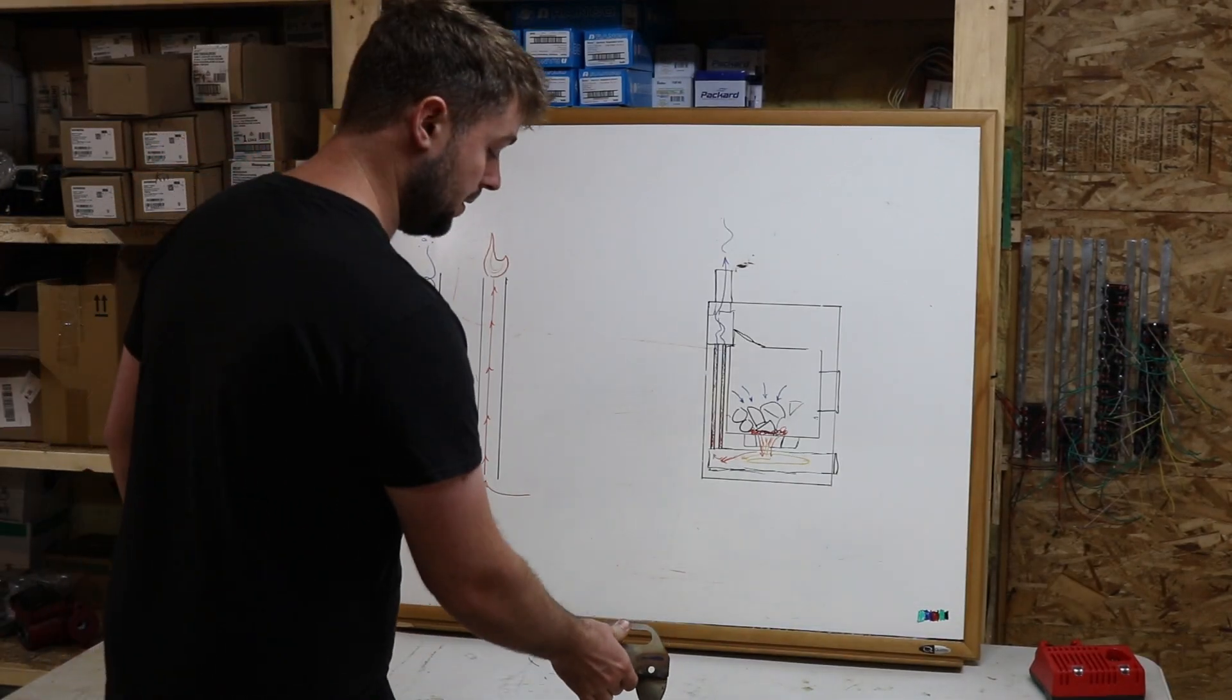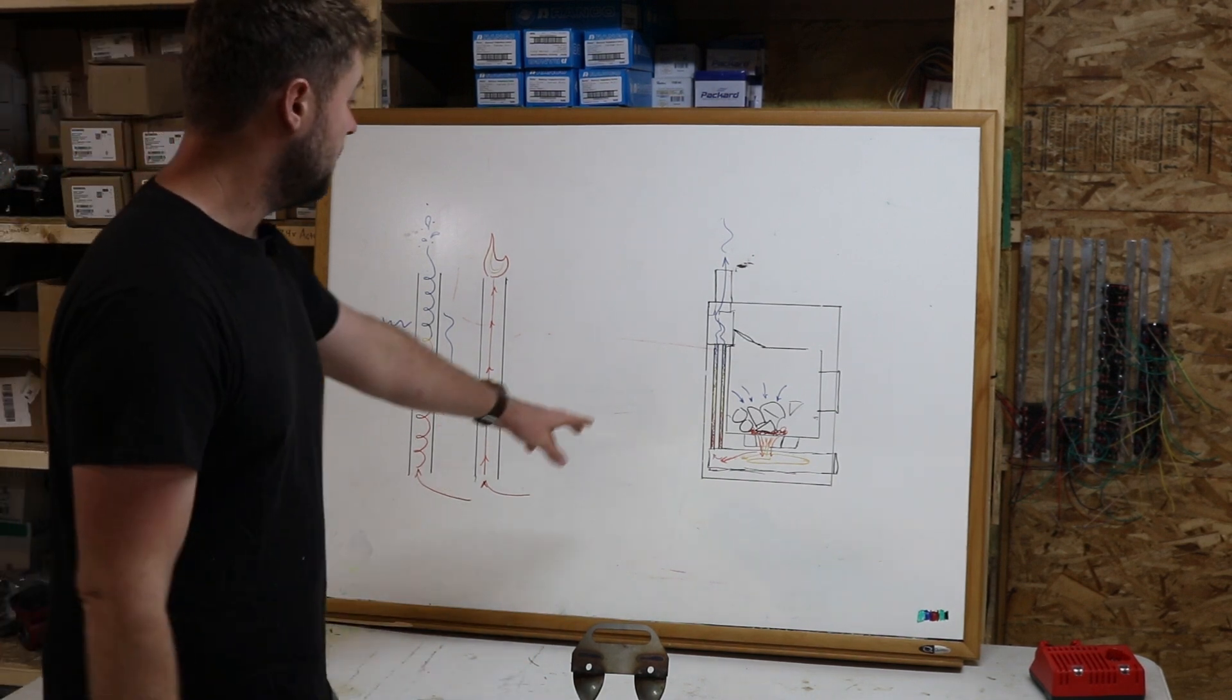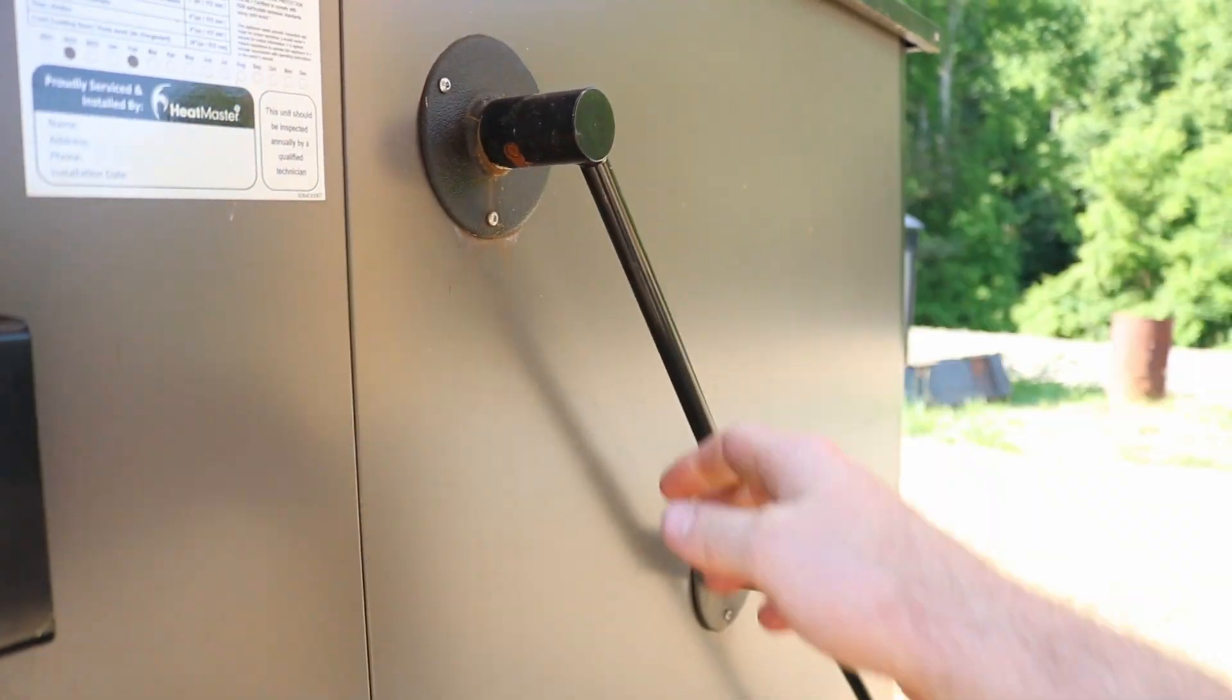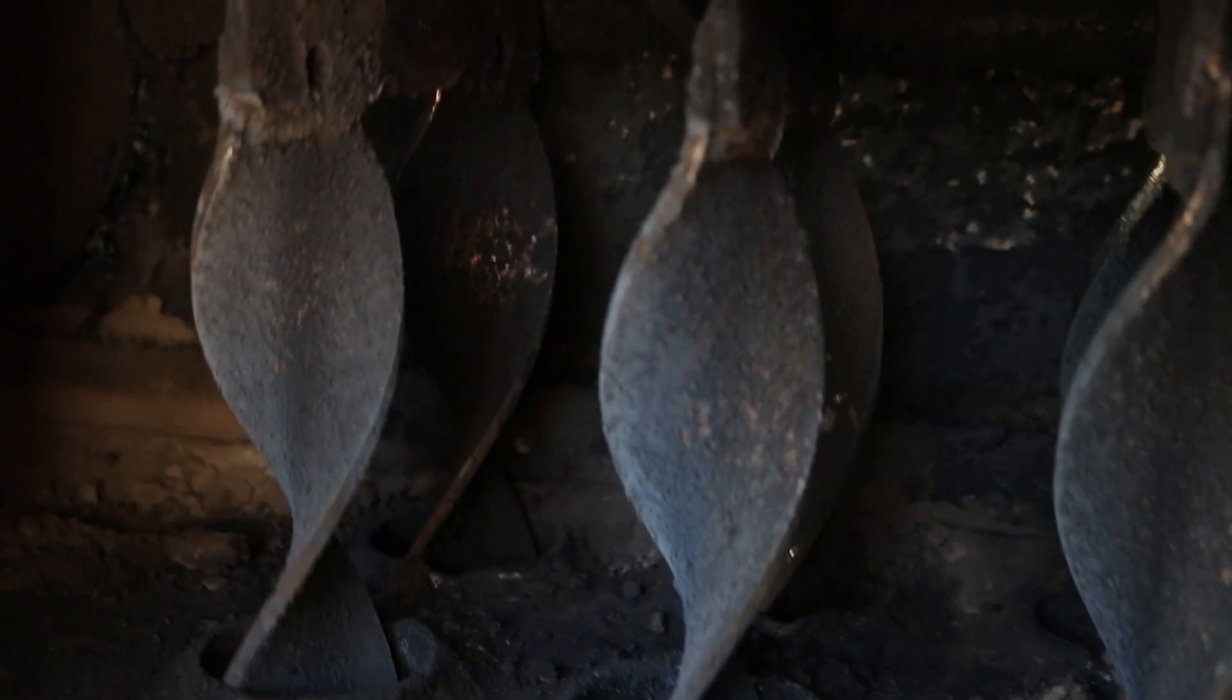Now the other function of a turbulator is to actually clean the exhaust tube. So in our furnaces, we have a handle on the side that you pull back and forth, and it raises and lowers these turbulators up and down.